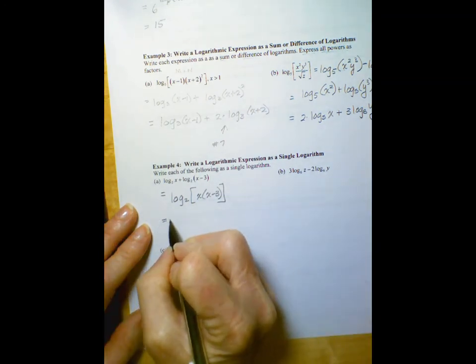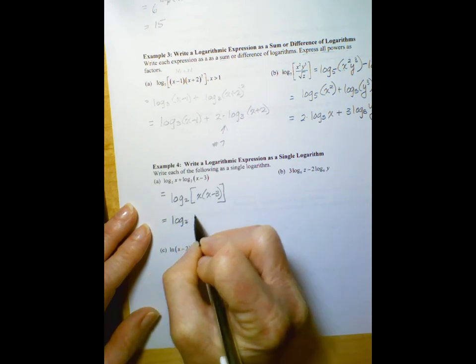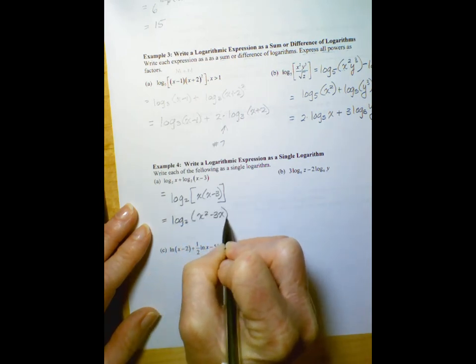And it just depends. You could go ahead and write that as log base 2 of x squared minus 3x. Distribute that x.